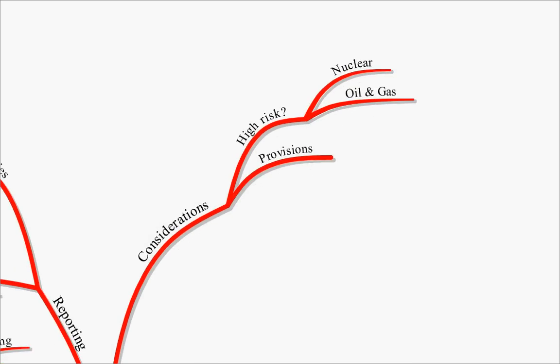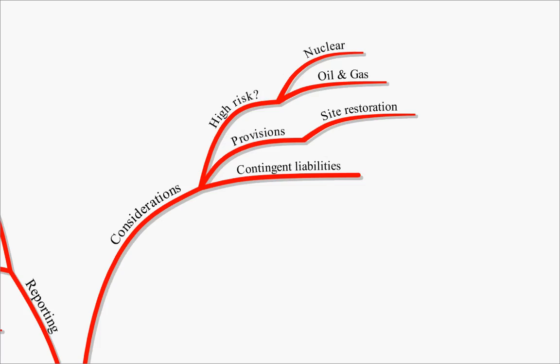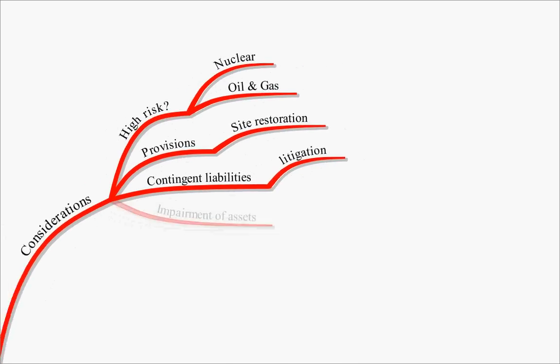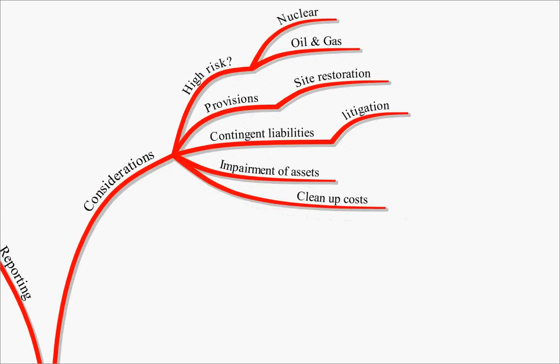This may also feed into the actual financial accounts, because there may be provisions for things like site restoration. There may be contingent liabilities for clean-ups or for litigation, or there may be impairment of assets or clean-up costs that you have to actually undertake. The auditor has to be very careful that these are reflected in the accounts as well. So it's not just socio-environmental assurance engagements, but also this may feed through to the financial audit.